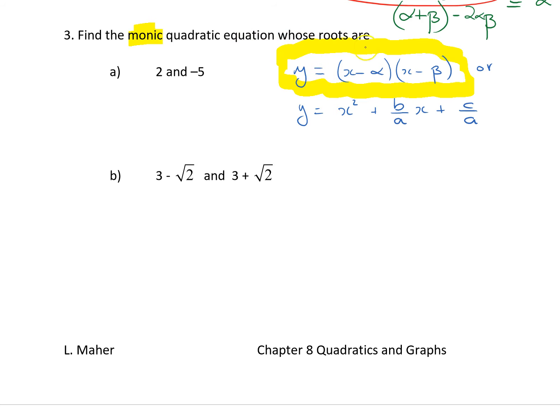Whose roots are, so 2 and minus 5, alpha is 2, beta is minus 5. Then, we could simply say, we've got x minus 2, x plus 5.